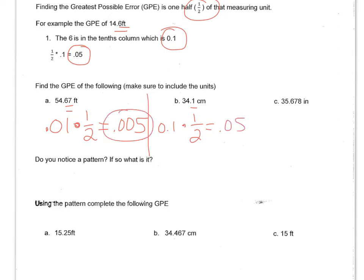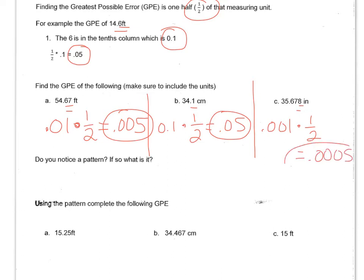So here's the answer here, here's the answer here. For the last example, the 8 is in the thousandths place. So we write that 0.001, and we're going to multiply that by one half. So in the calculator, it's 0.001 times 0.5, which equals 0.0005. So that's the greatest possible error for that measurement.